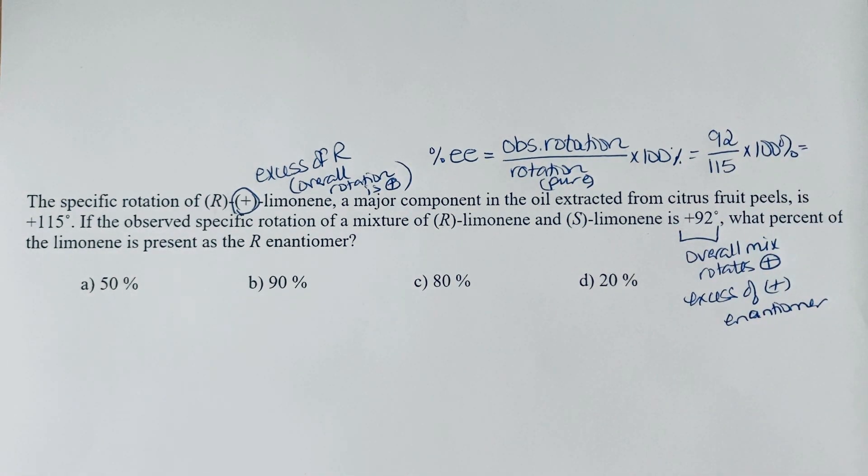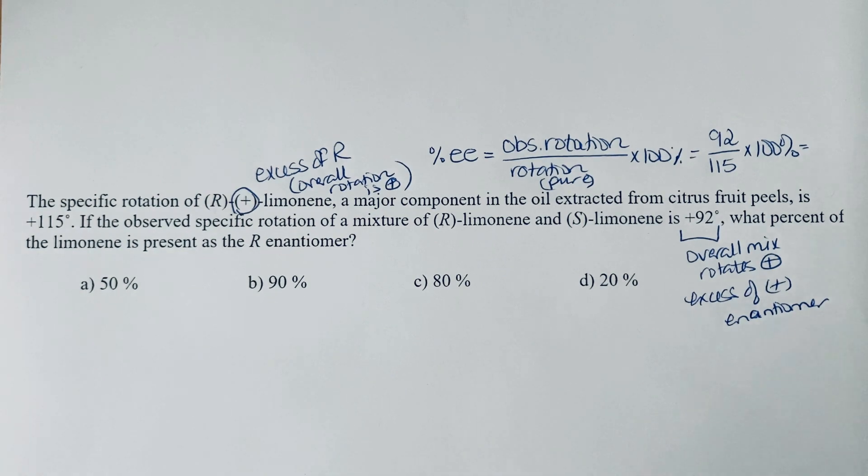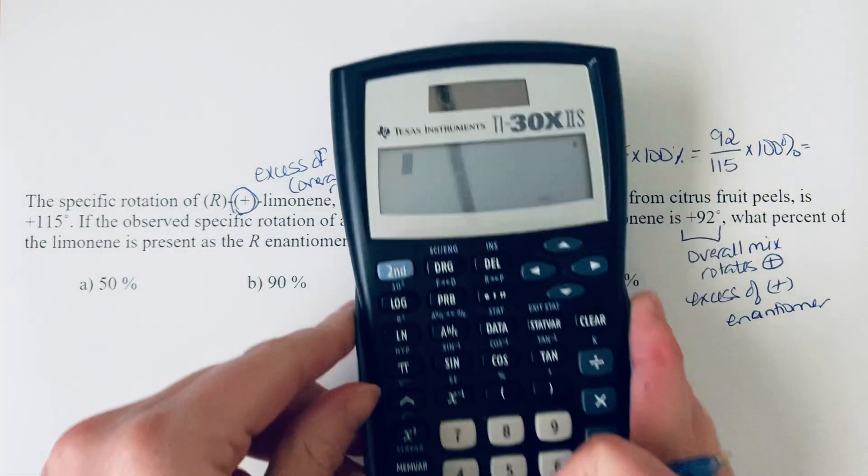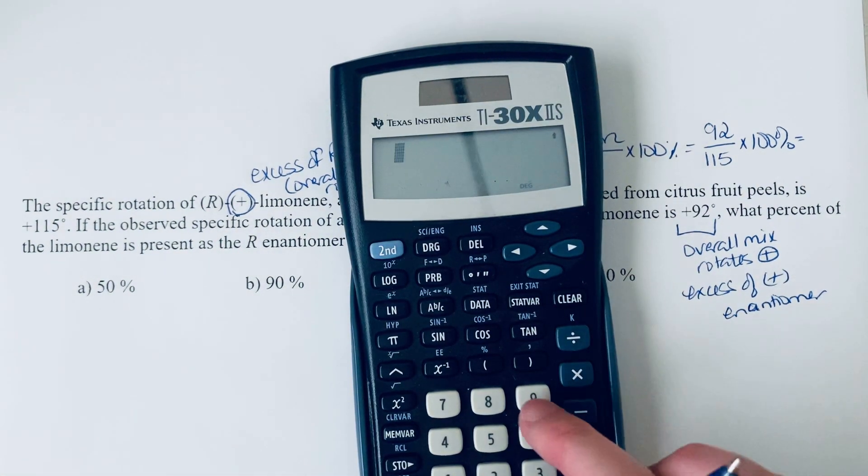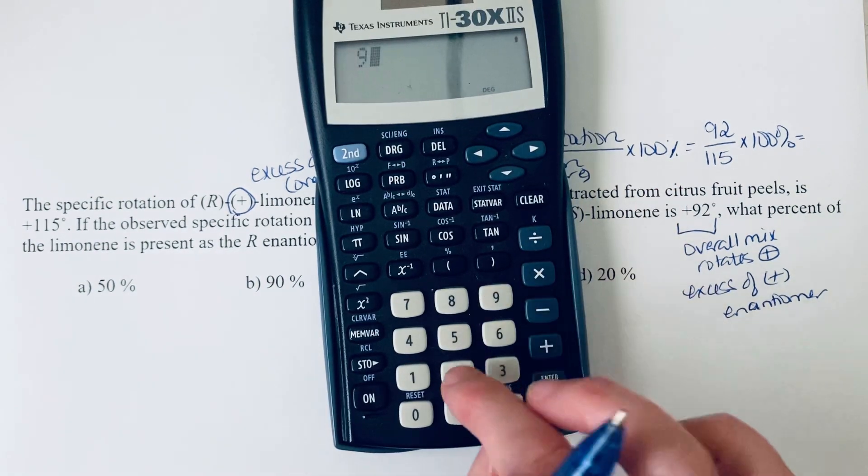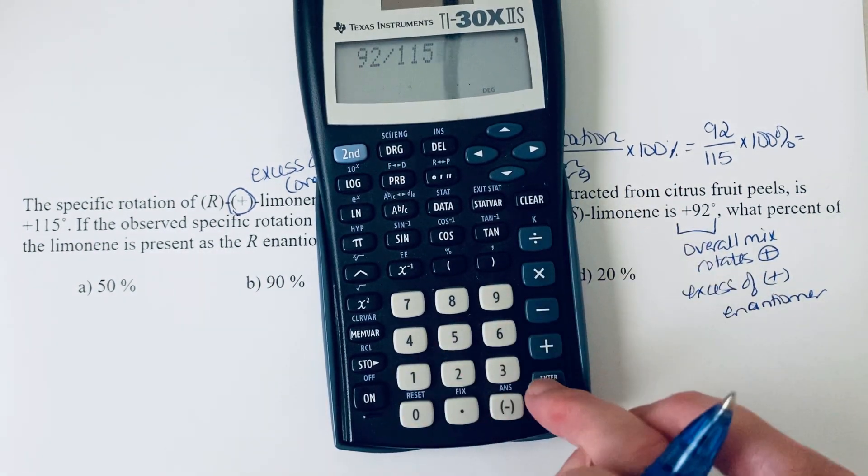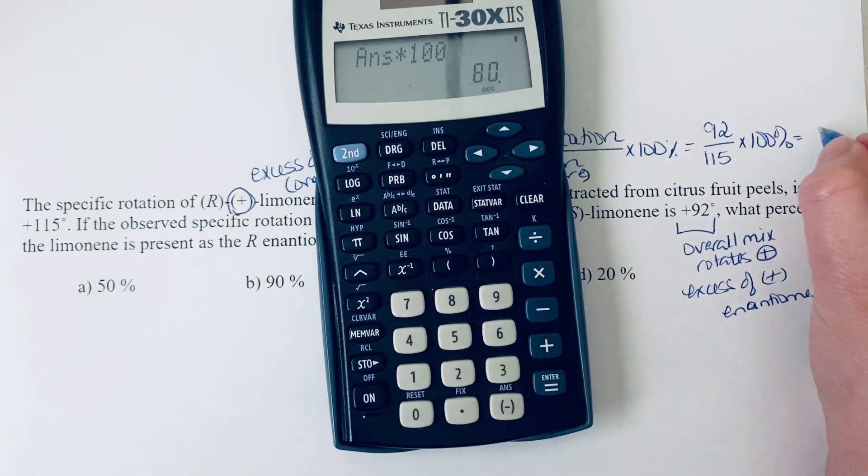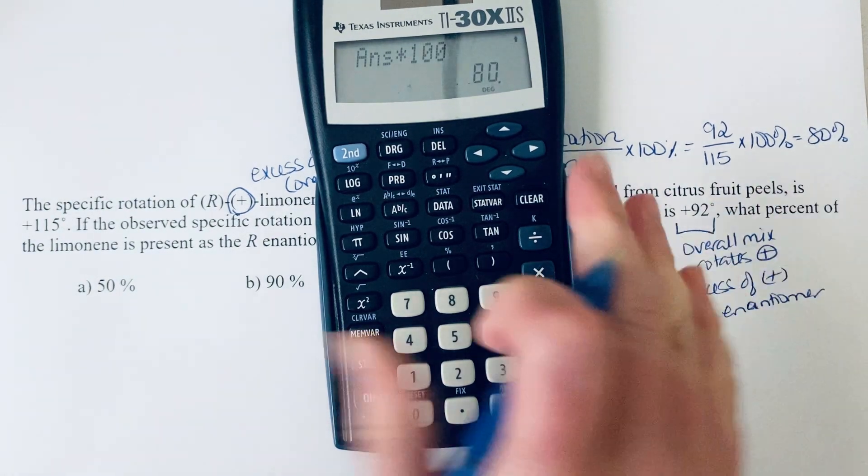Okay, so you might be able to do that in your head or maybe you're going to want to bring out a calculator here and just quickly say 92 divided by 115 and multiply that by 100. And so we'll see that that's 80%. So 80% is our excess.